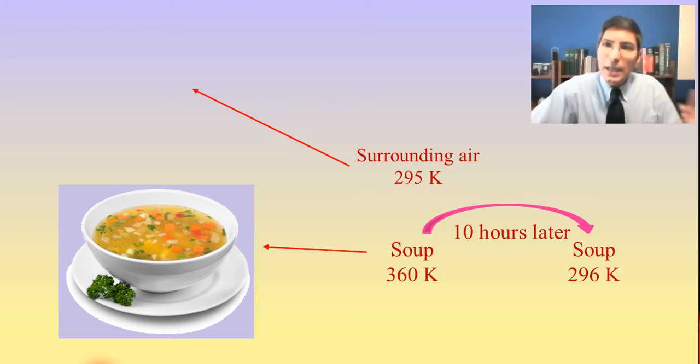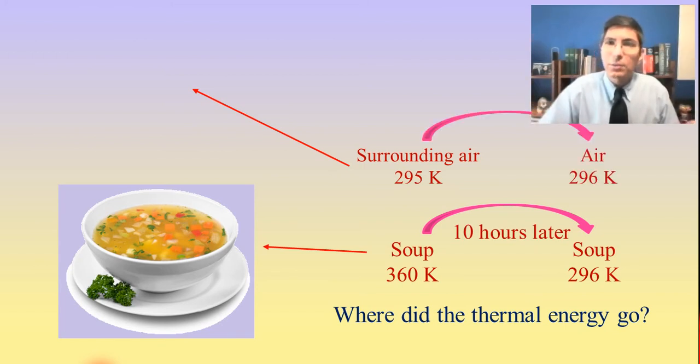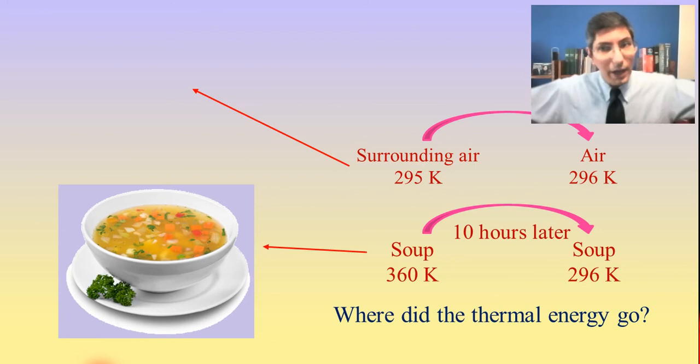That means that the heat had to go somewhere. That thermal energy had to be transferred because heat doesn't just disappear—it has to go somewhere. So the question is, where did that thermal energy go? Well, it had to go to the surroundings, to the surrounding air. And as a result, the temperature of the surrounding air goes up. It doesn't go up very much because there's a lot of air in the room and not a whole lot of soup in the bowl.